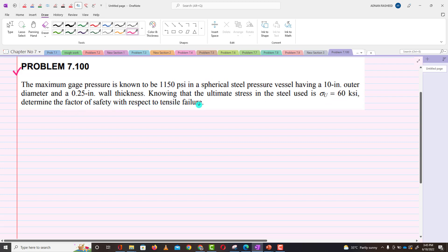So let's start with the given data. It is given that this is a spherical pressure vessel and that is made of steel. The pressure in this vessel is 1150 psi, so P = 1150 psi.